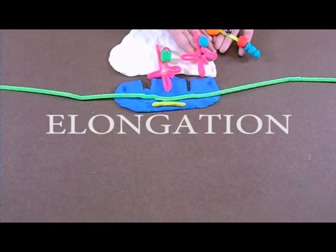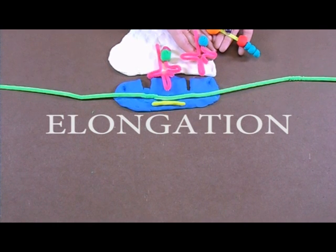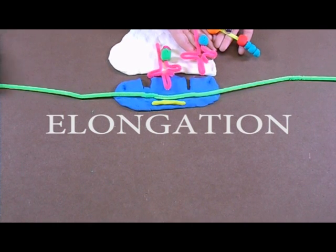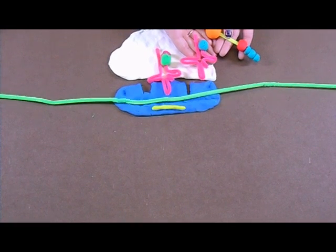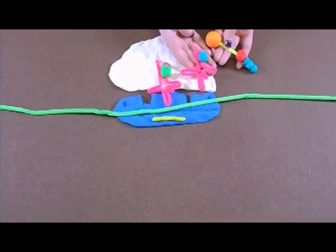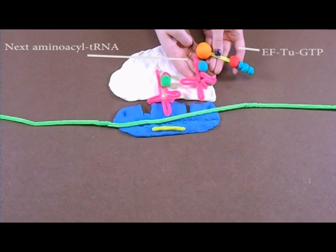Next is elongation. In elongation, the next codon on the mRNA transcript is read. An elongation factor 2 that is bound to a GTP binds to the corresponding aminoacyl tRNA.